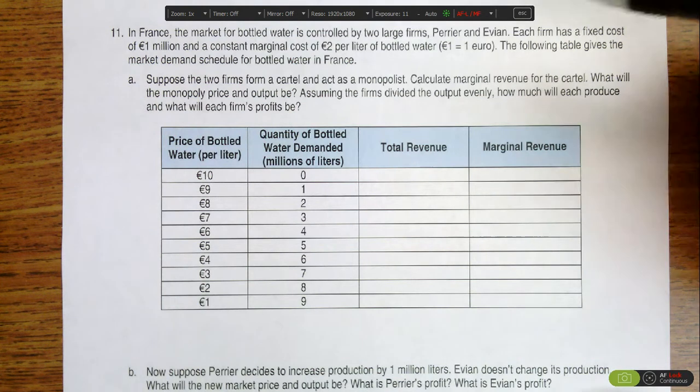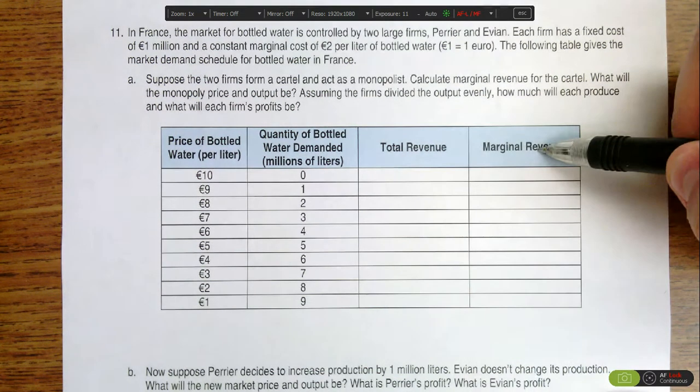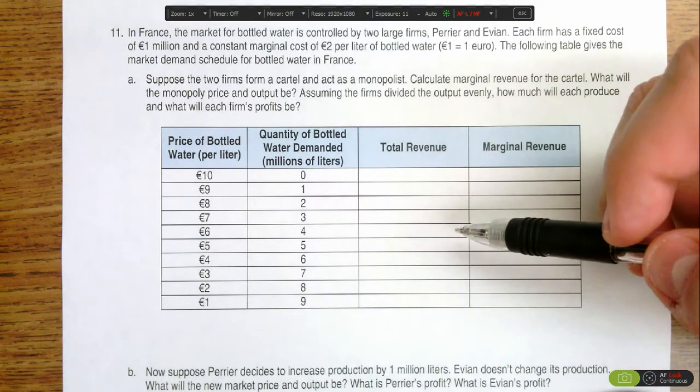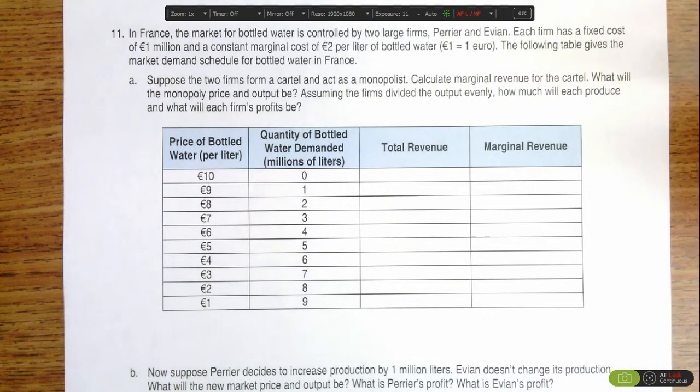To do that, first we need to identify total revenue and then calculate marginal revenue. Total revenue is calculated by price times quantity, and when you do that, you're going to get the numbers that will appear here in just a minute.